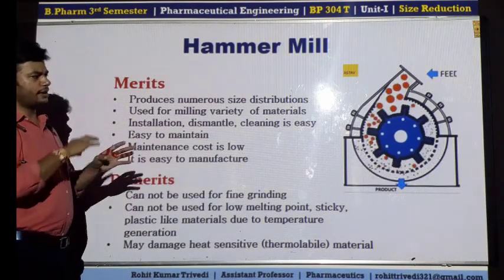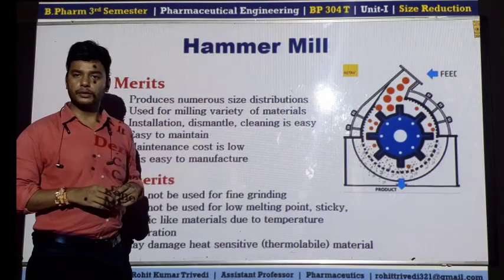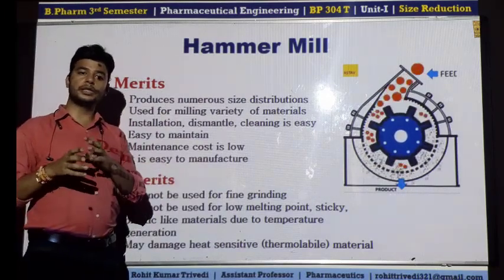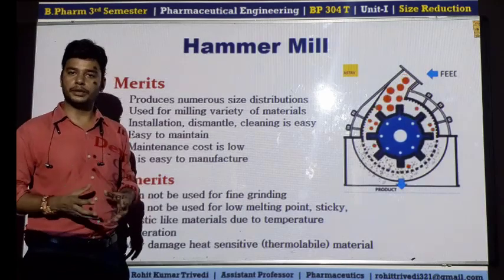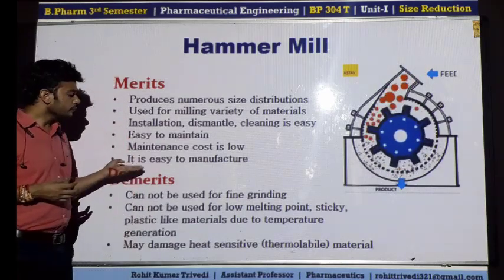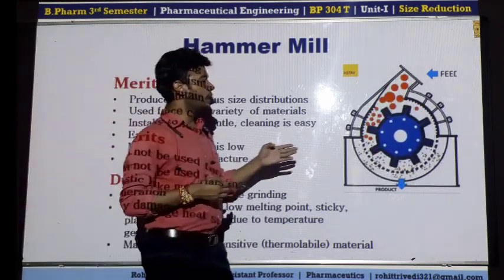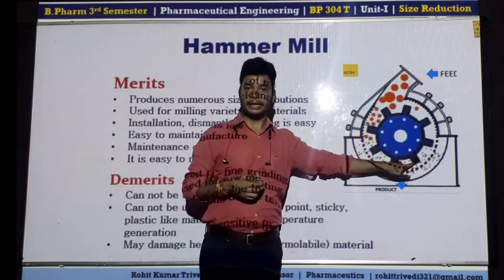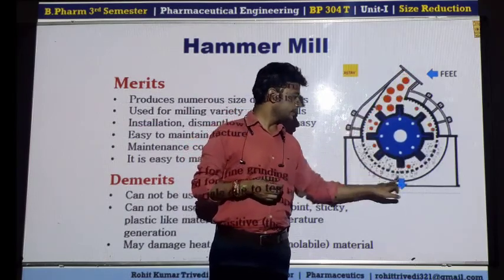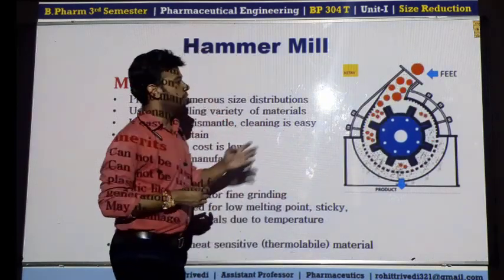We can easily maintain and service our hammer mill in the pharmaceutical industry. There is no very complicated structure in the hammer mill. The maintenance cost is very low, due to which the processing and ultimately the final product cost is reduced. The manufacturing of the machine is very easy — there is a moving disc on which the hammers are placed, the circulatory area, and the screen — it is a simple construction.